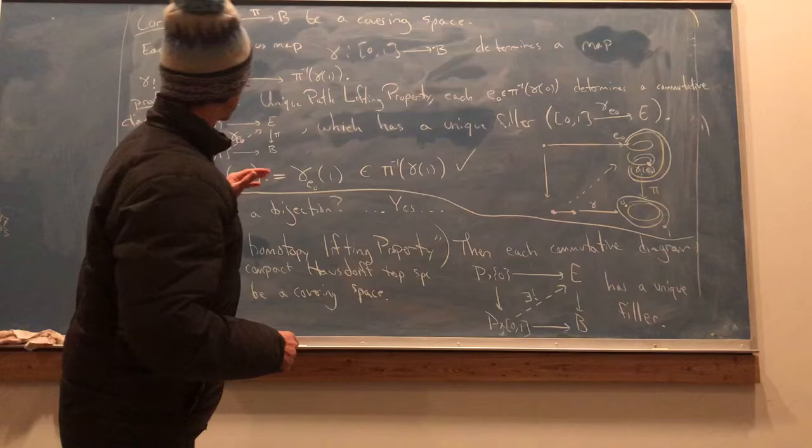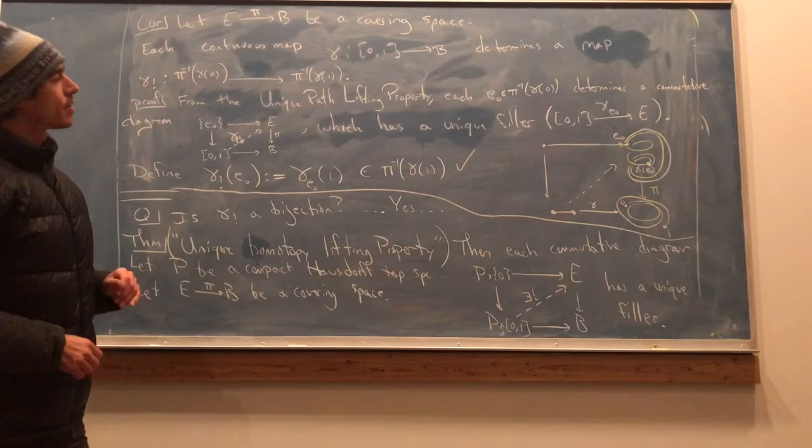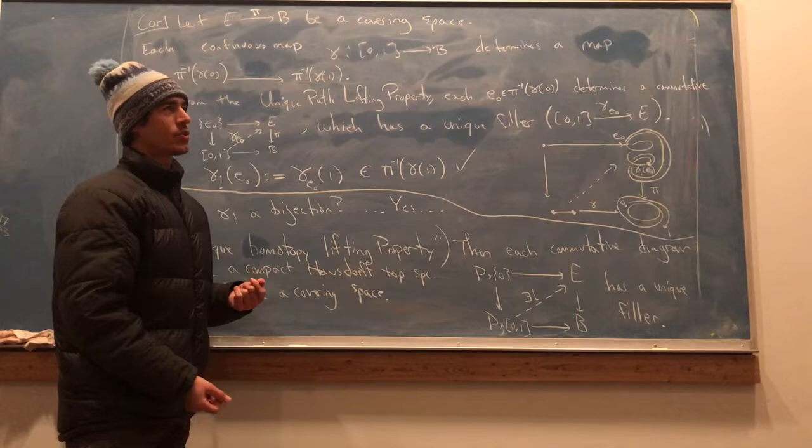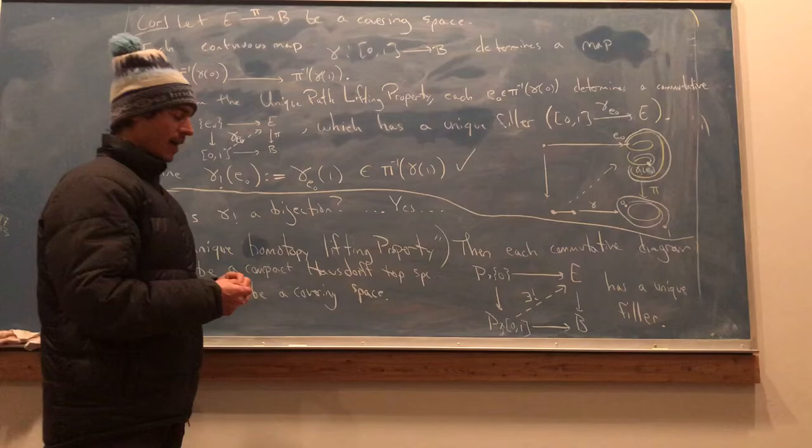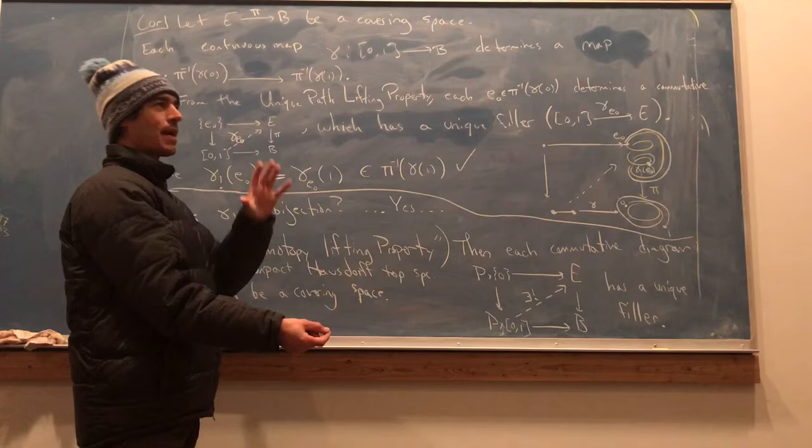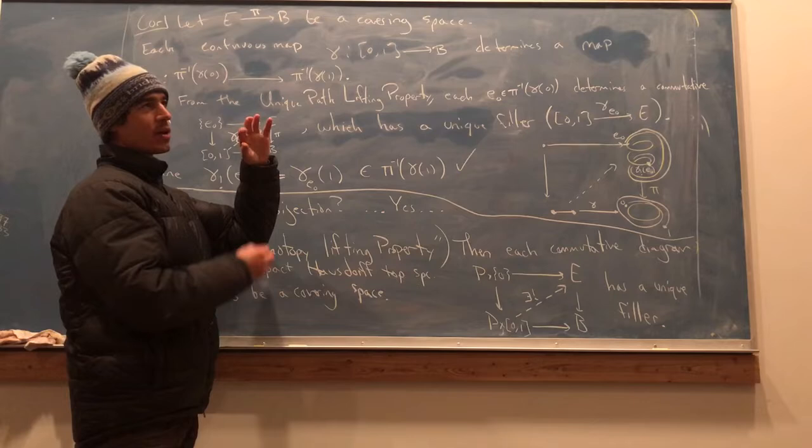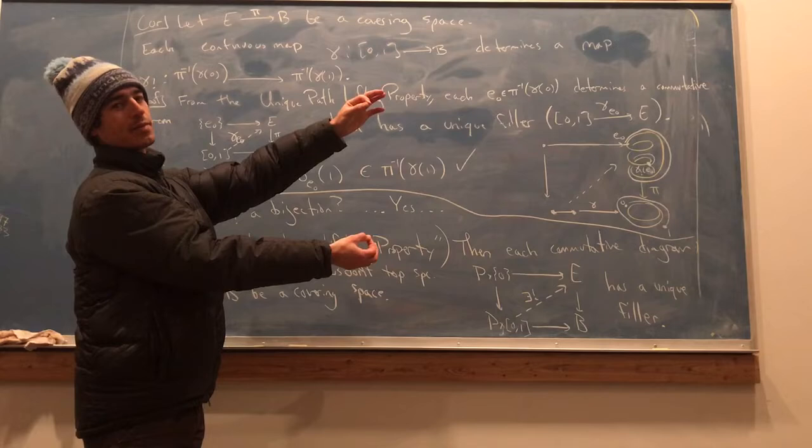Okay, the result we just established has this corollary, which gives the existence of what's called monodromy maps. So the idea is that if you have a covering space and you have a path in the base, that path determines a bijection from the preimage of that path over the starting point to the preimage of that path over the ending point.